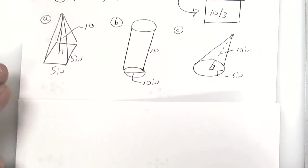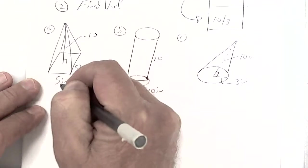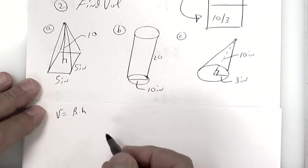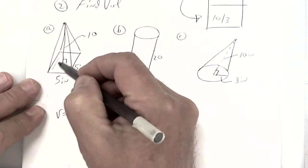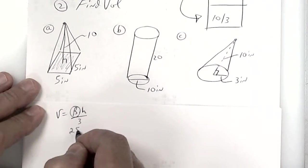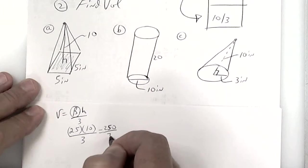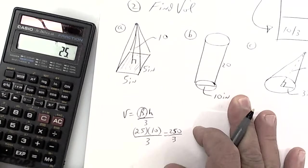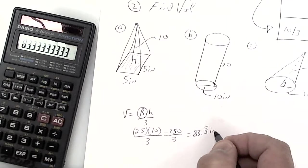Let's find volume. This one right here is a square pyramid — it's a pyramid because it comes to a point, and it's called a square because the bottom is a square. The formula is Volume = B × H ÷ 3. The area of the bottom is 5 × 5 = 25, times the height, divided by 3. That gives us 250 ÷ 3 = 83.3 repeating cubic inches.